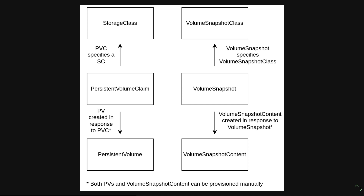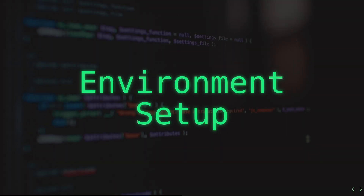The VolumeSnapshot is analogous to the PersistentVolumeClaim — it's a request to create a snapshot, and if that request is valid it will result in a VolumeSnapshotContent, which is the actual snapshot representation on the underlying storage system — that EBS snapshot in AWS or that snapshot in your on-prem storage. Both PersistentVolumes and VolumeSnapshotContent can be created manually, but we'll focus on automatically provisioned objects.